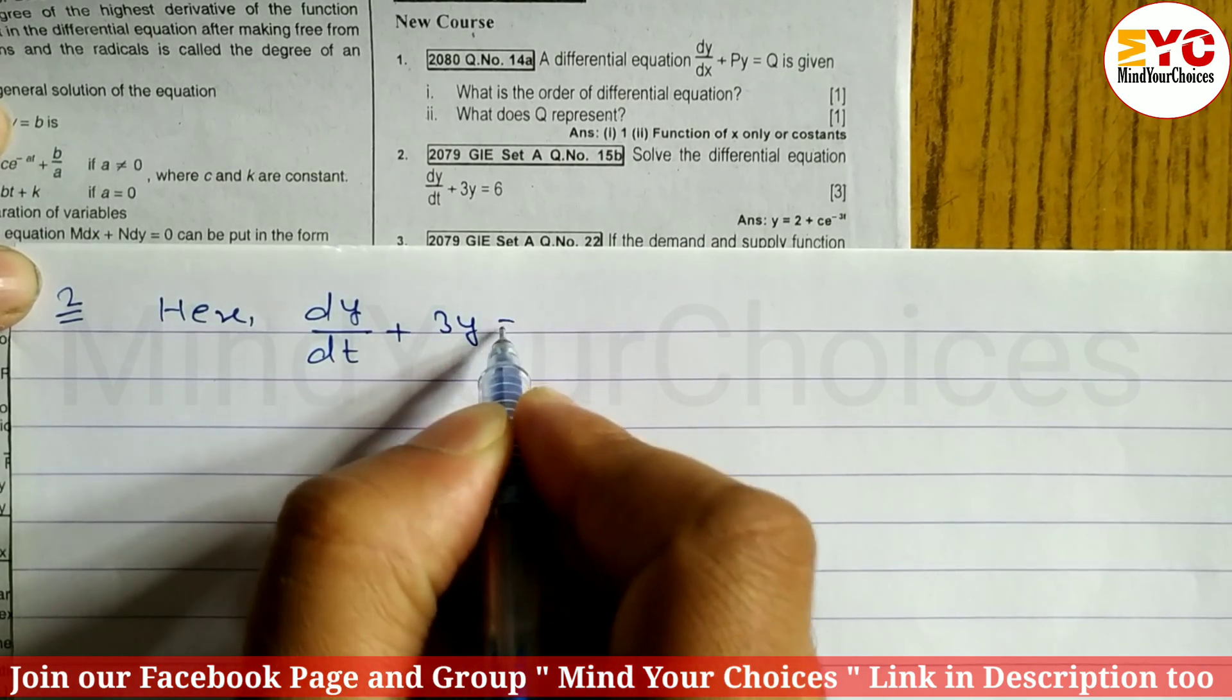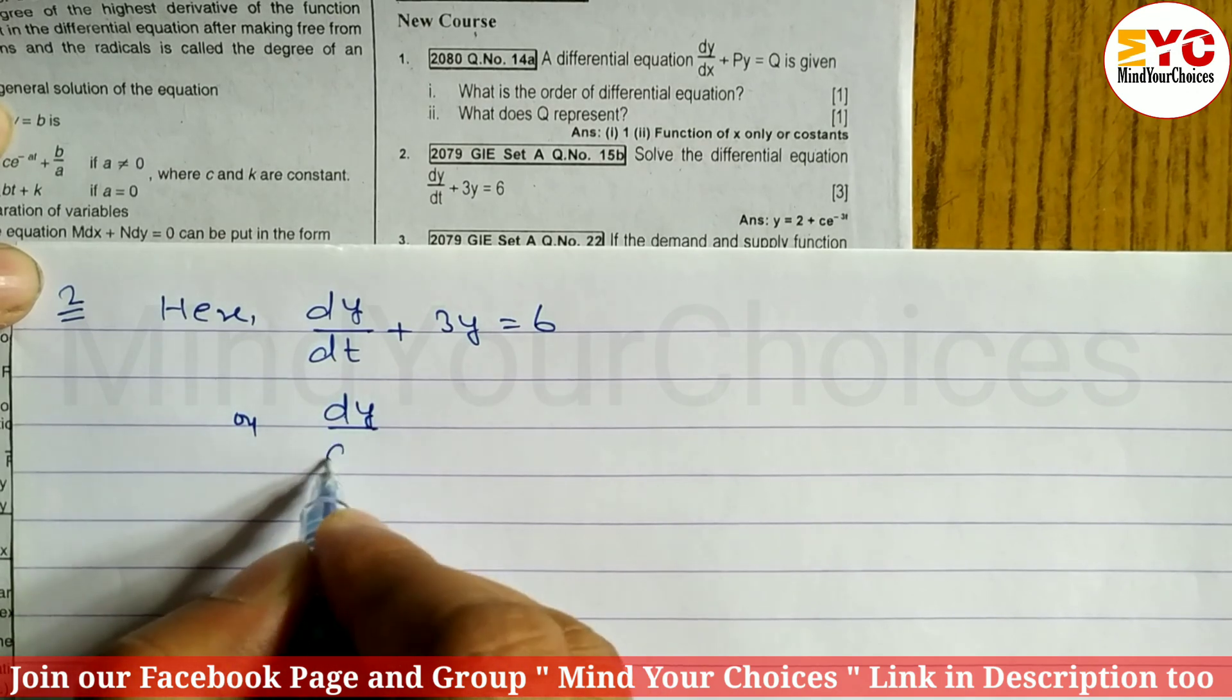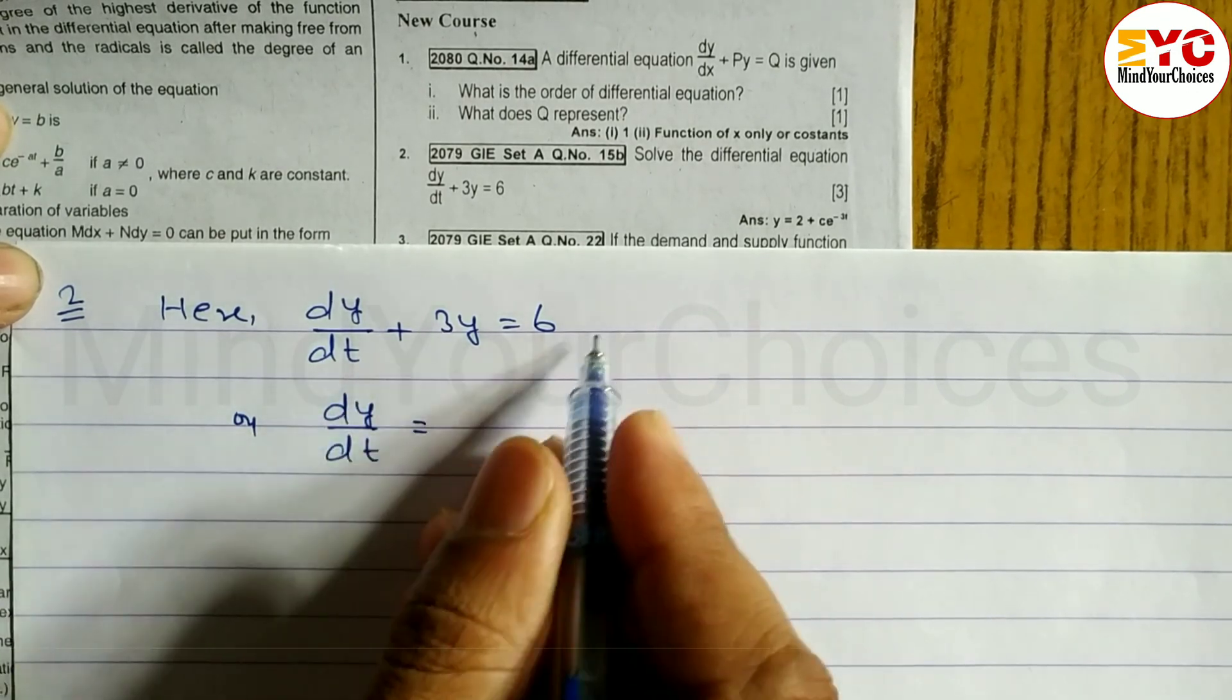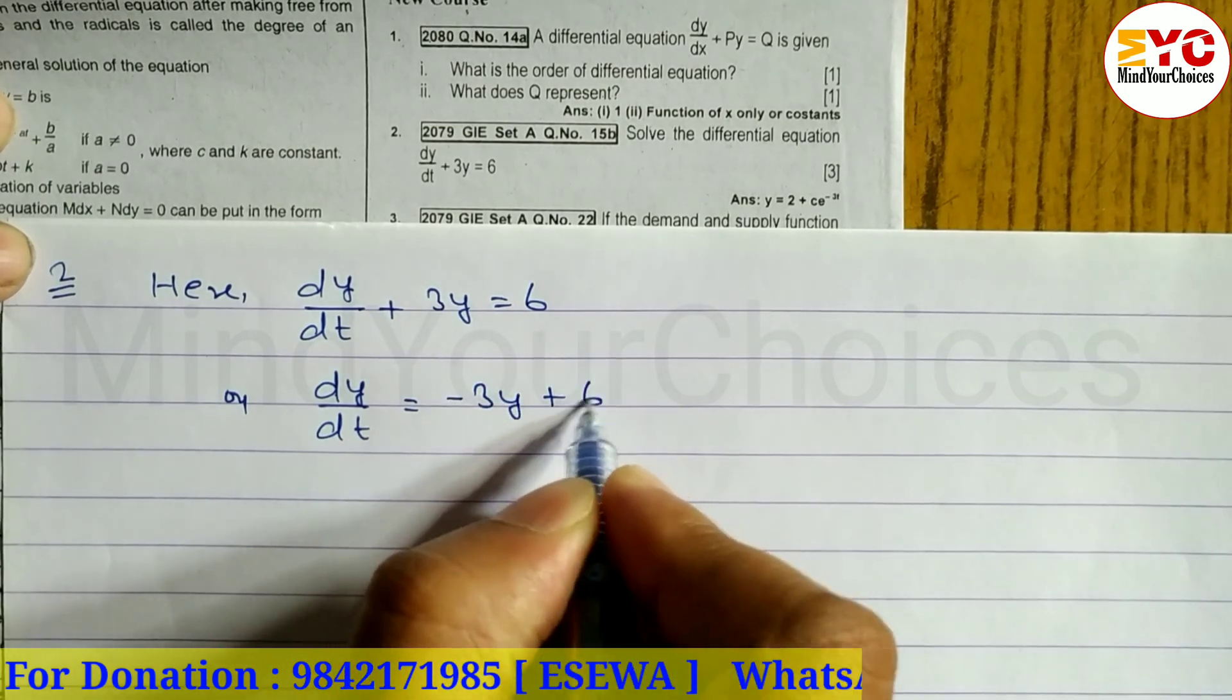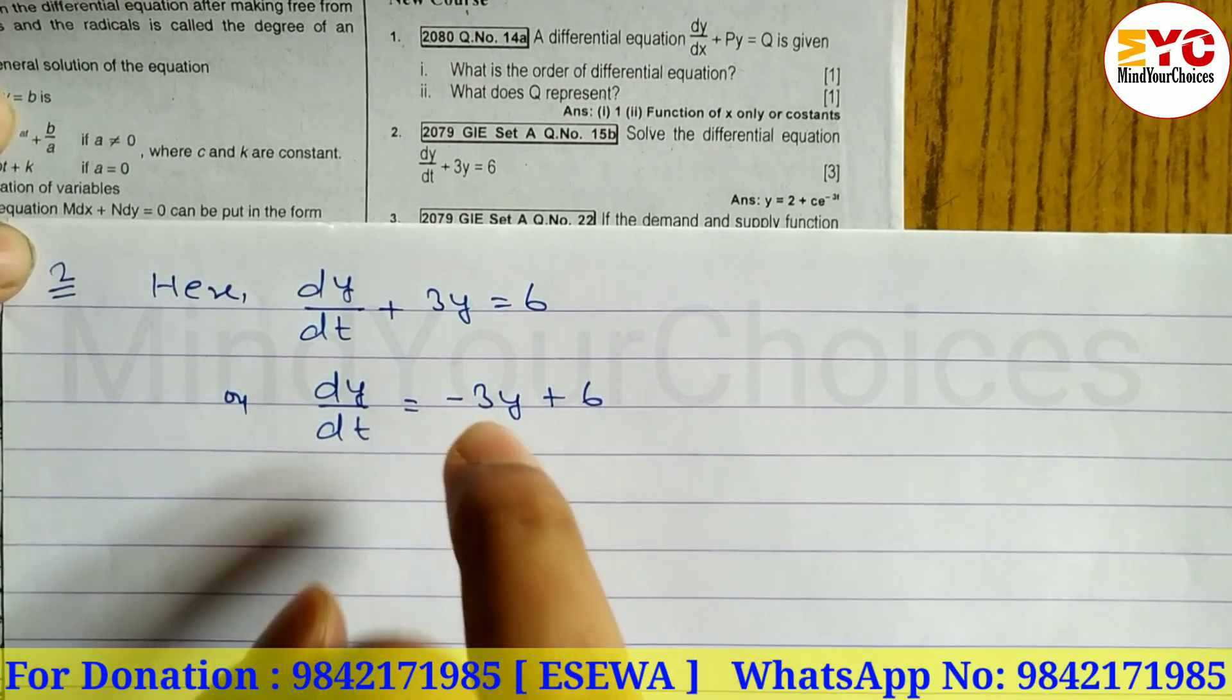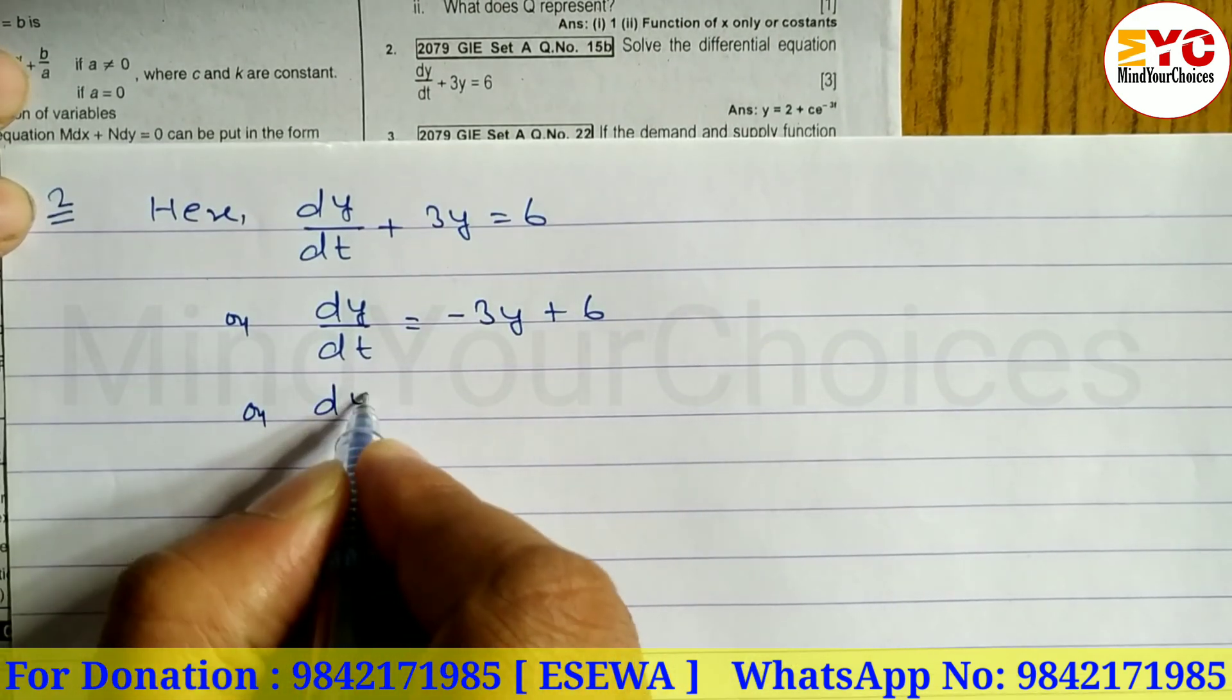We can write dy/dt is equal to, moving to the right side, minus 3y plus 6. The y term goes to the right side first, so dy/dt equals minus 3y plus 6.